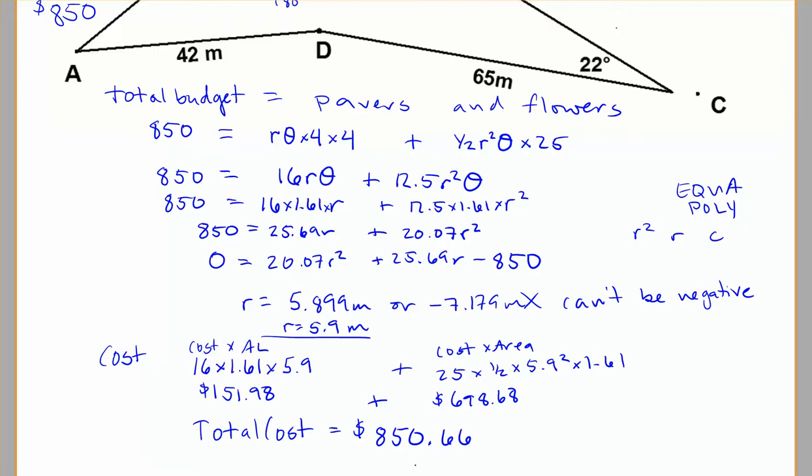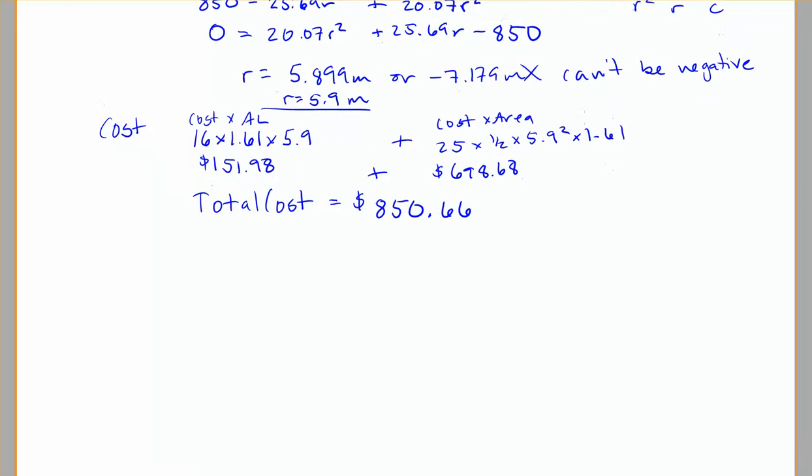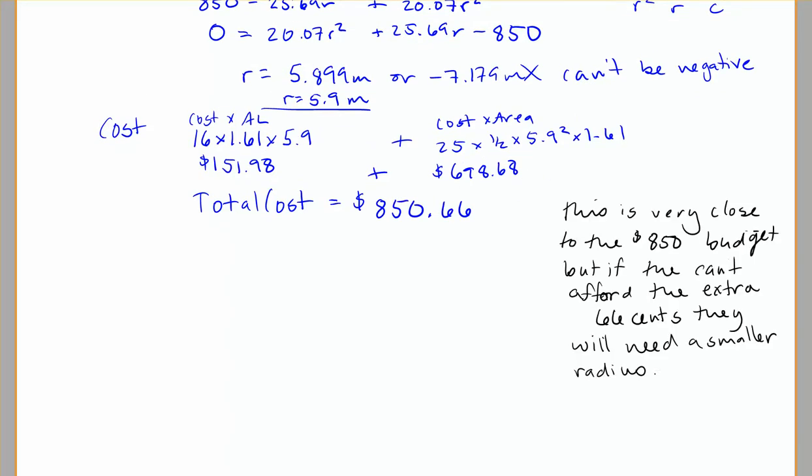Plus 698.68, we end up with roughly $850.68. So that's pretty close to the $850 budget, but it is over. So if you leave this as your answer, you want to make sure that you talk about that. So you could say something like, this is very close to the $850 budget, but if they can't afford the extra $0.68, they will need a smaller radius.